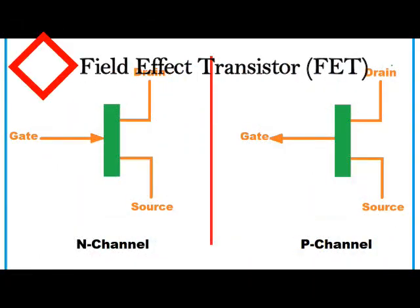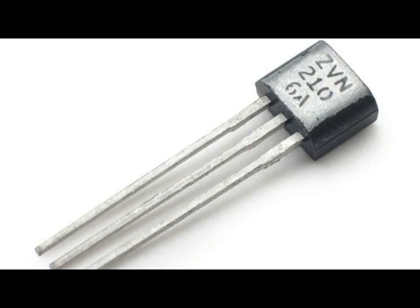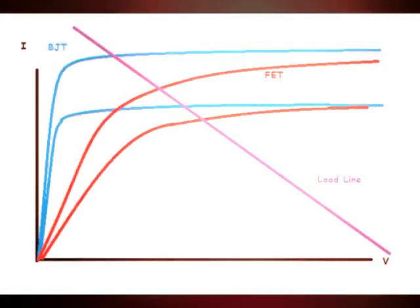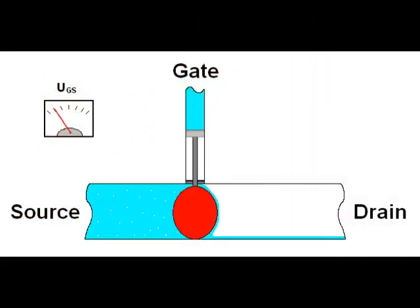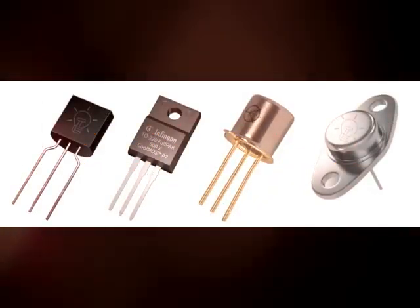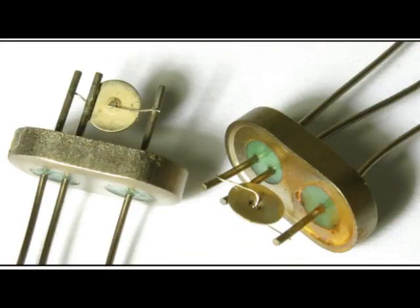Field effect transistors (FET): these types of transistors control and determine the shape and size of the channel based on unipolar voltage. FET transistors perform the role of voltage control. Field effect transistors have much less energy consumption and heat loss than bipolar junction types. Also, the amount of noise and input impedance of FETs is higher than that of bipolar types. Two types — the junction field effect transistor (JFET) and the metal oxide semiconductor field effect transistor (MOSFET) — are the main categories of field effect transistors.